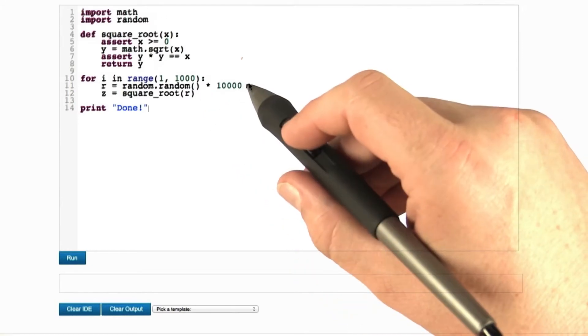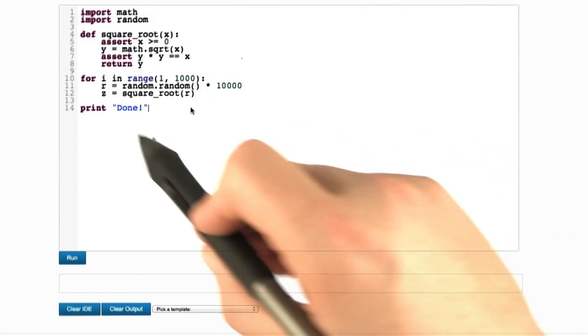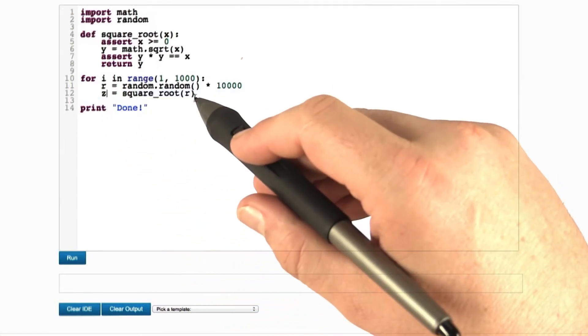This is a floating-point number, and it comes from the random module. And then we feed this random number into a square root function, storing the result in z.